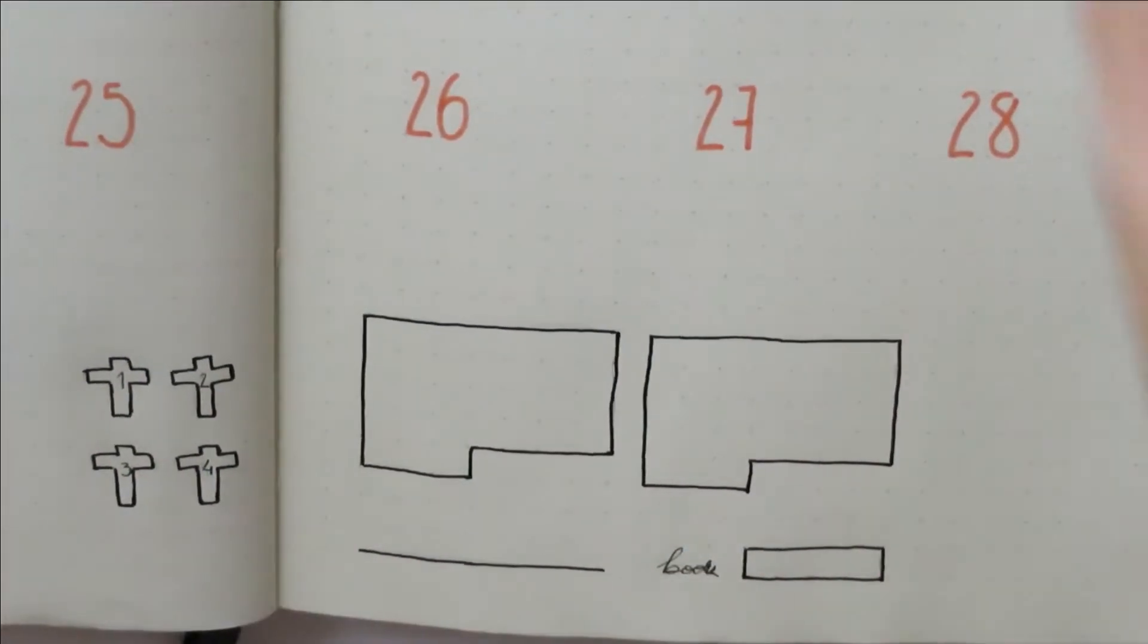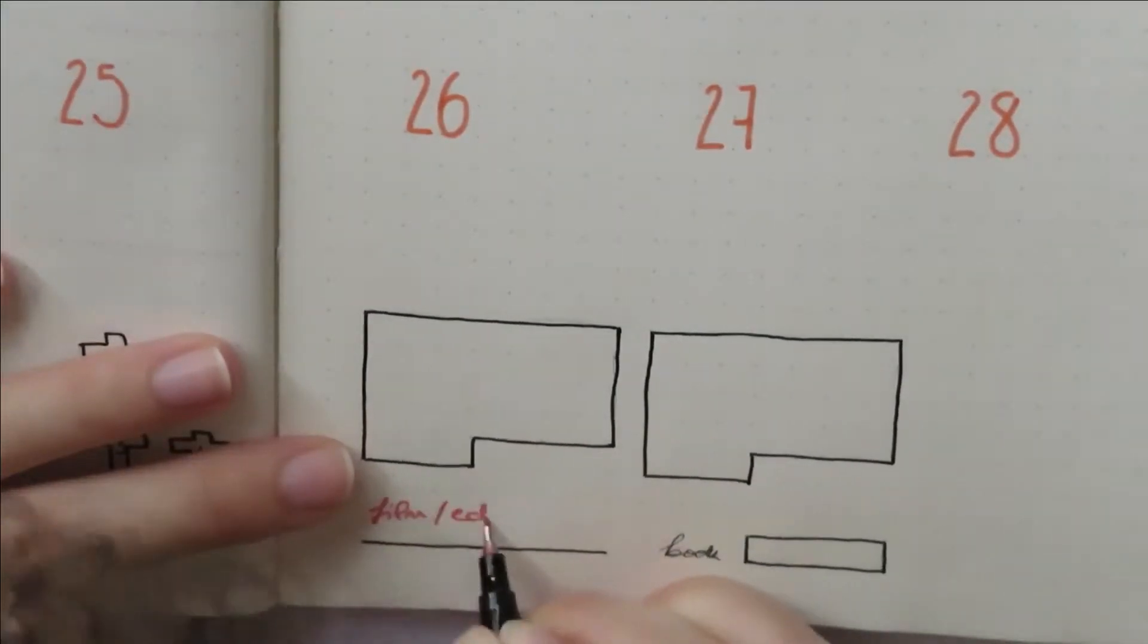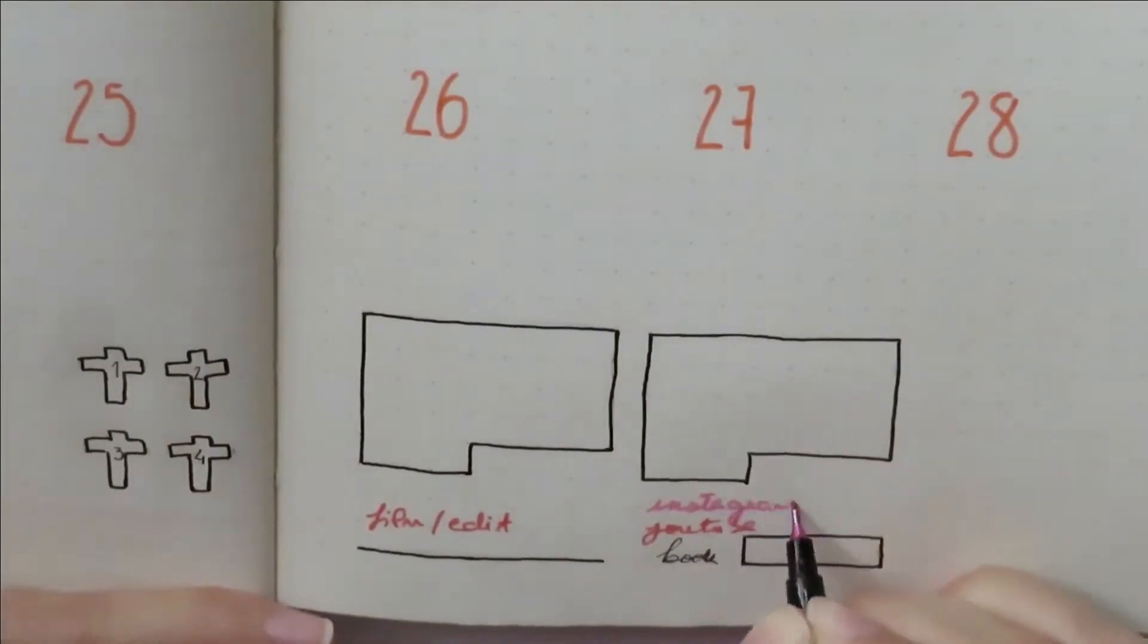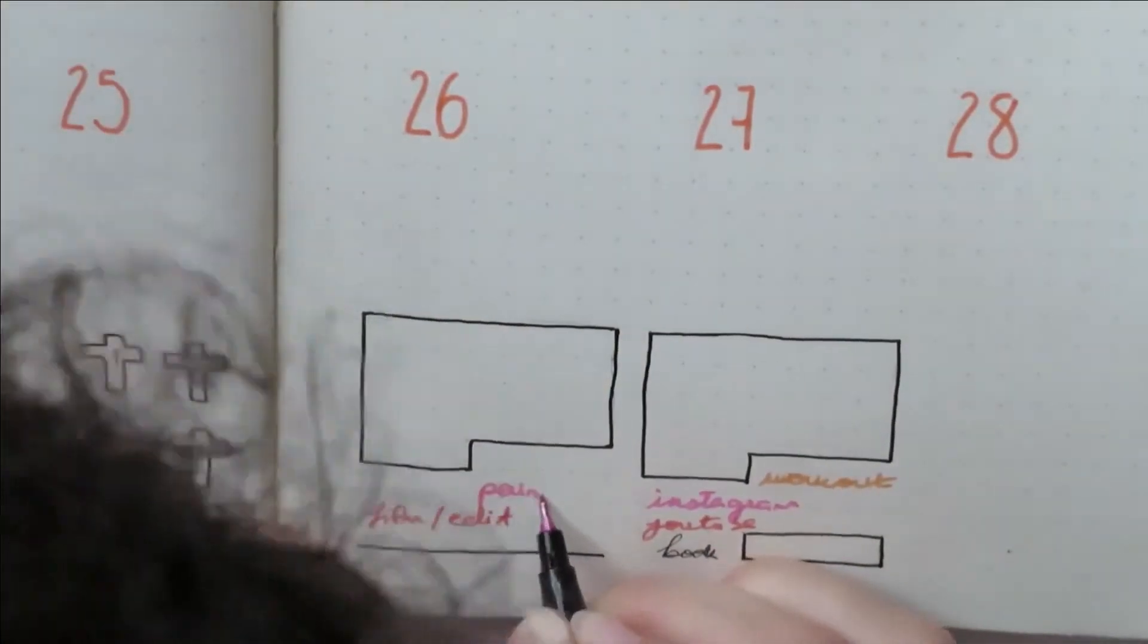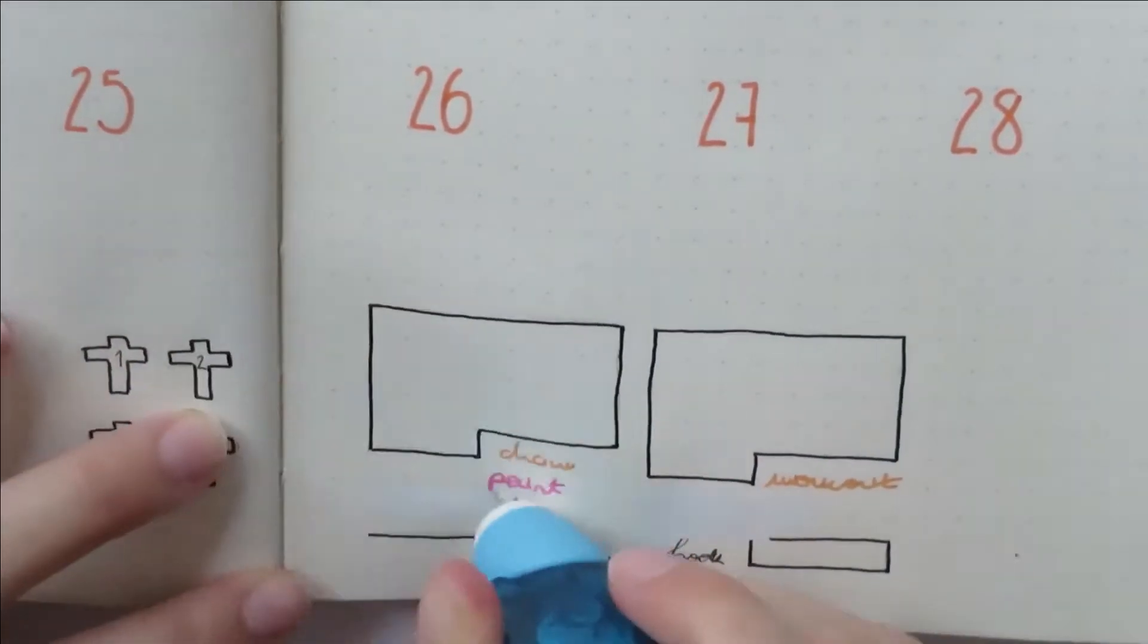And the rectangle is a project that I'm working on that usually takes more than a month. Right now I'm working on an illustrated book, and at the end of the month I will fill in the rectangle to what feels like is the proportionate amount of work that I've done so far.